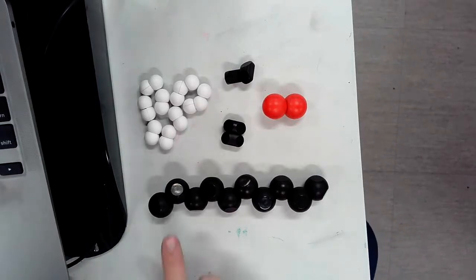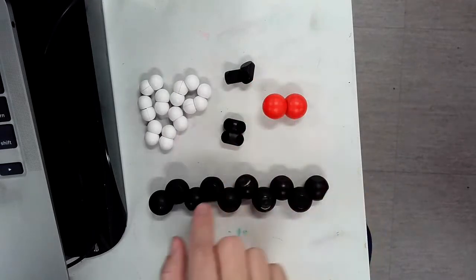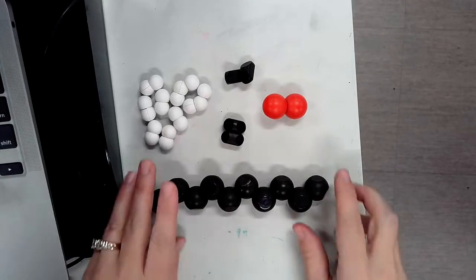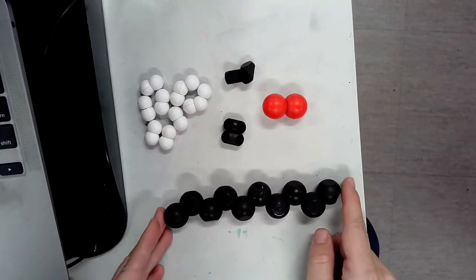Okay, to make your fat you need 10 carbons, two sets of double bonds, two oxygens, and 18 hydrogens. So let's start by linking together all 10 of your carbons like so. Then we're going to start with carbon number one.